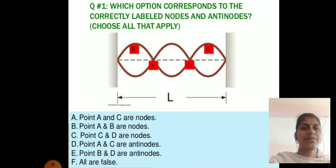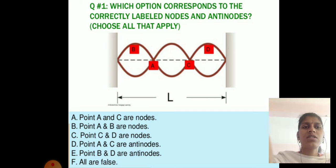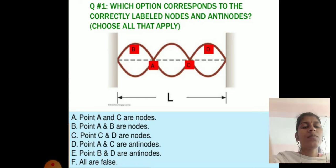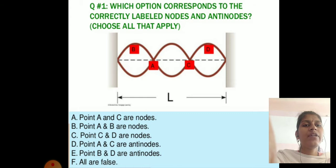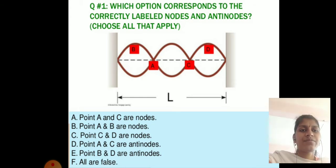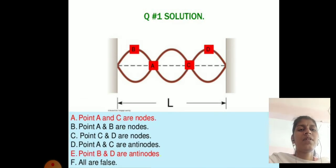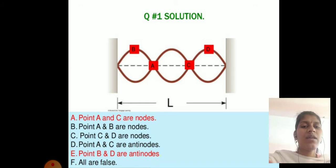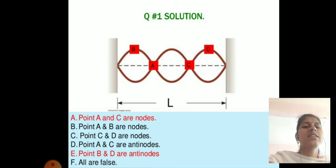Problem 1: Which option corresponds to the correctly labelled nodes and anti-nodes? The answer is that points A and C are nodes, and points B and D are anti-nodes.